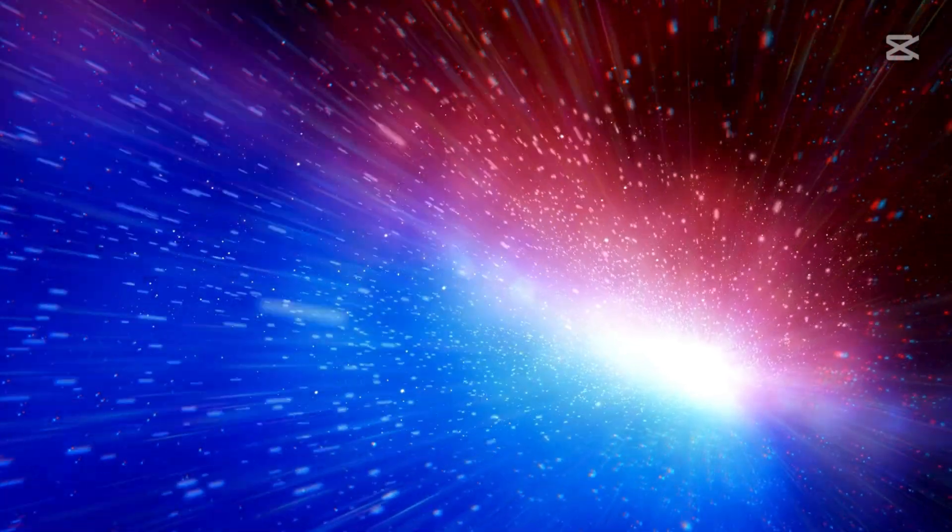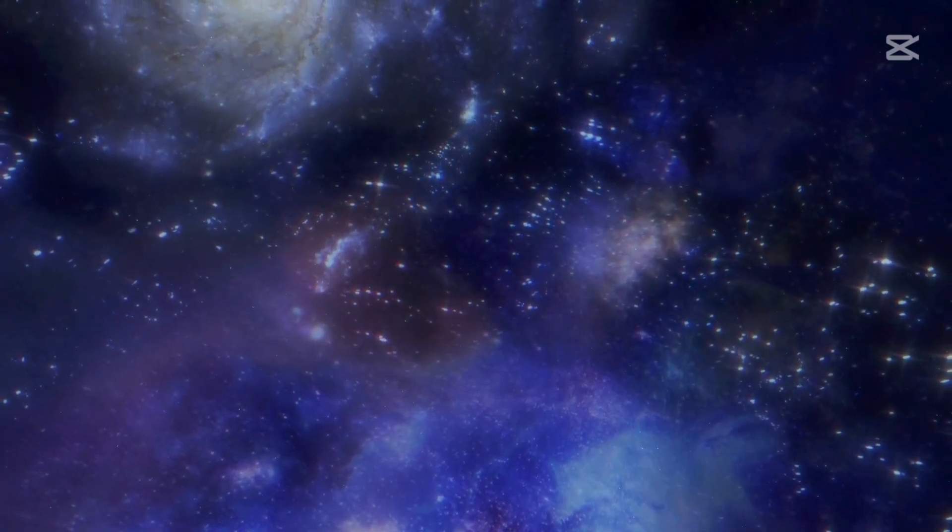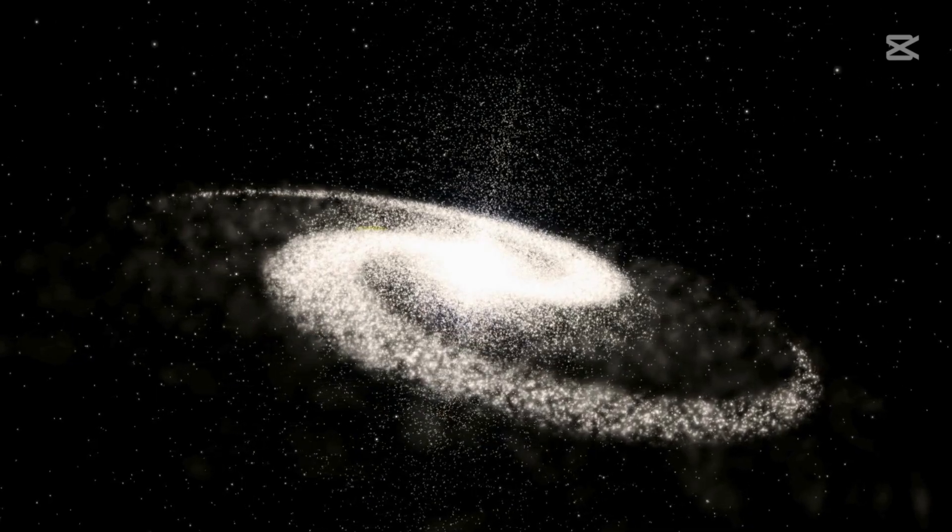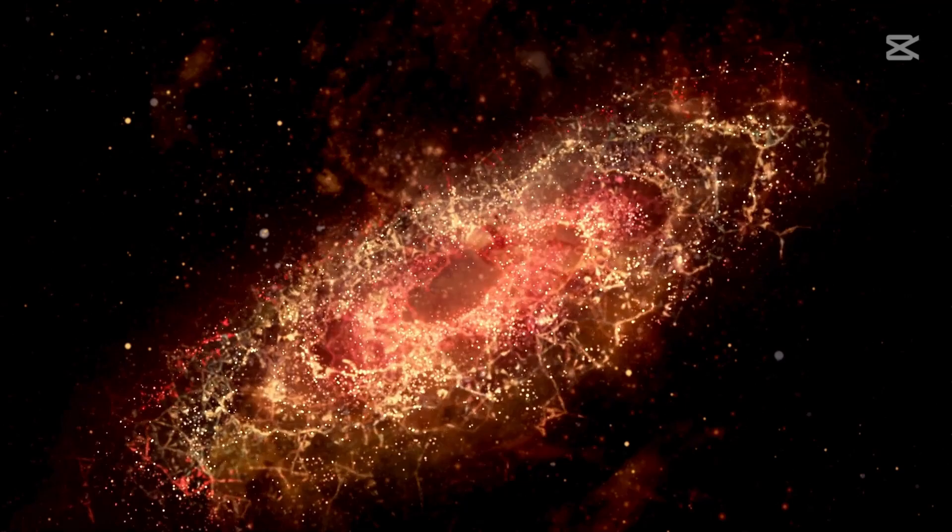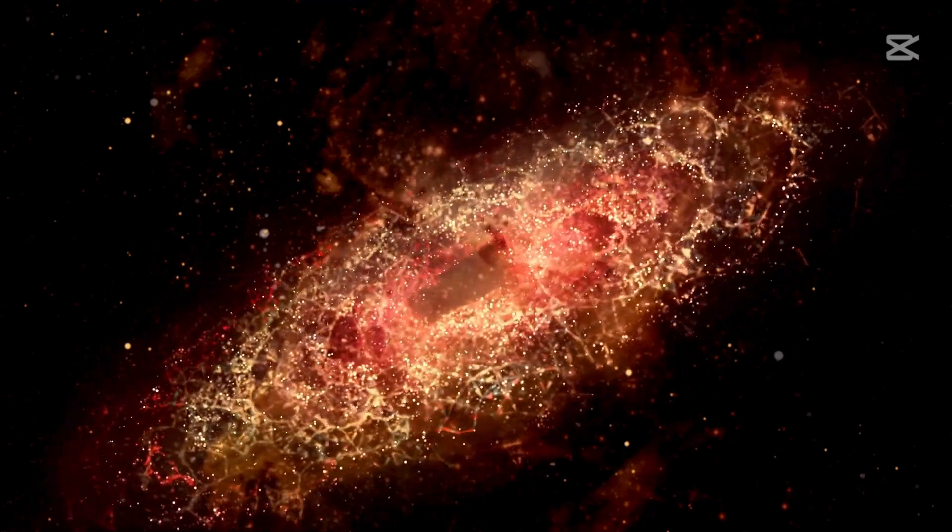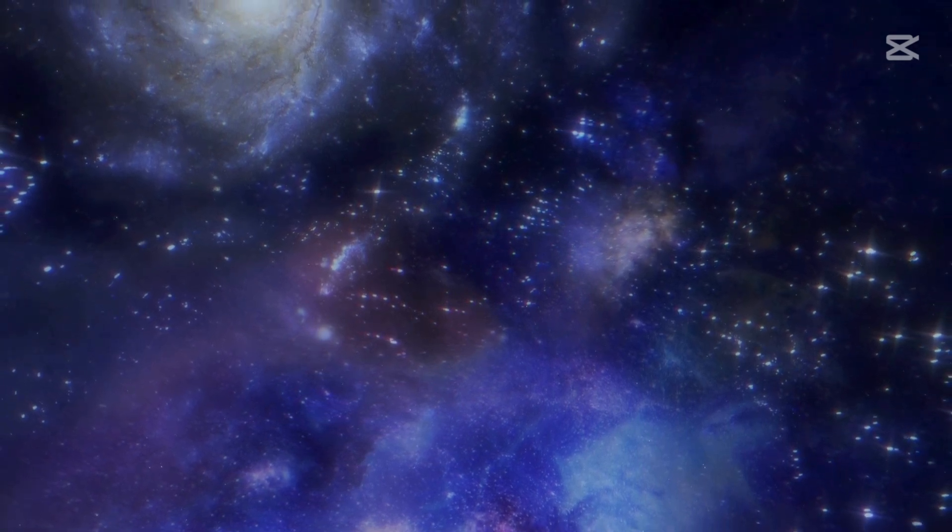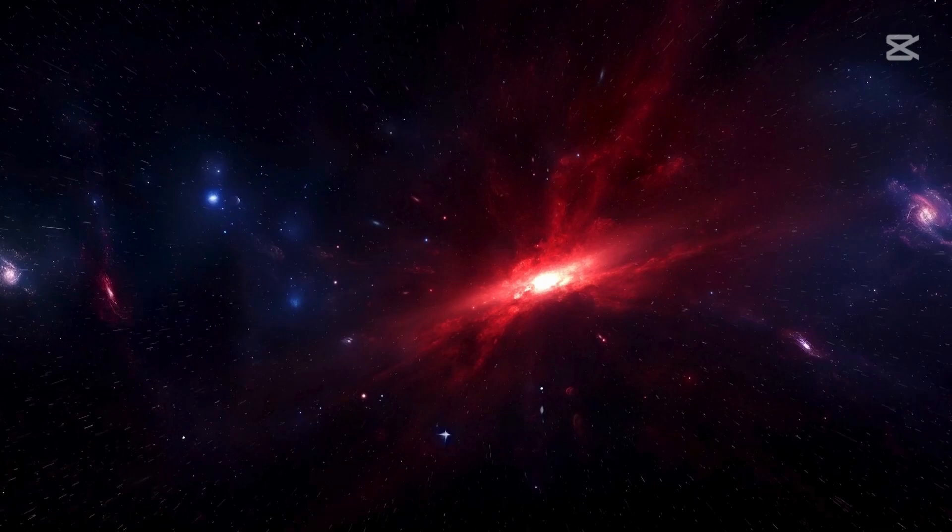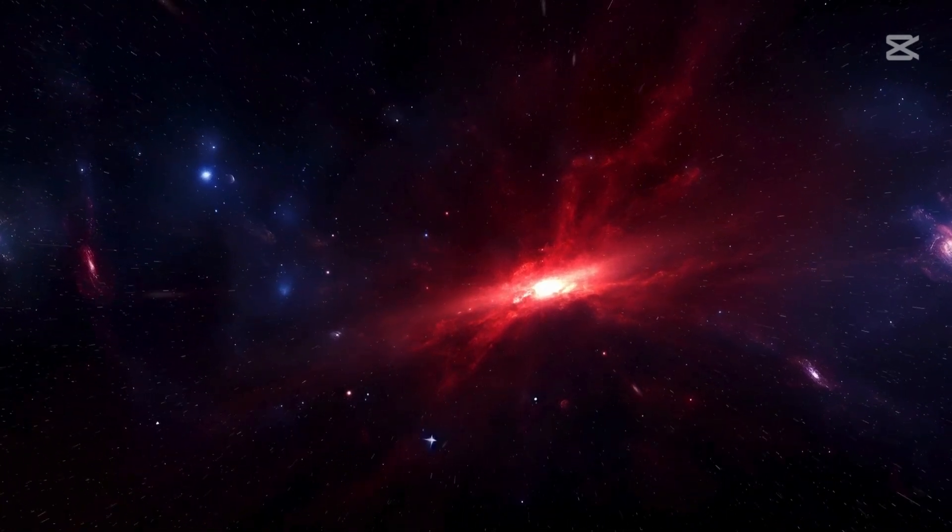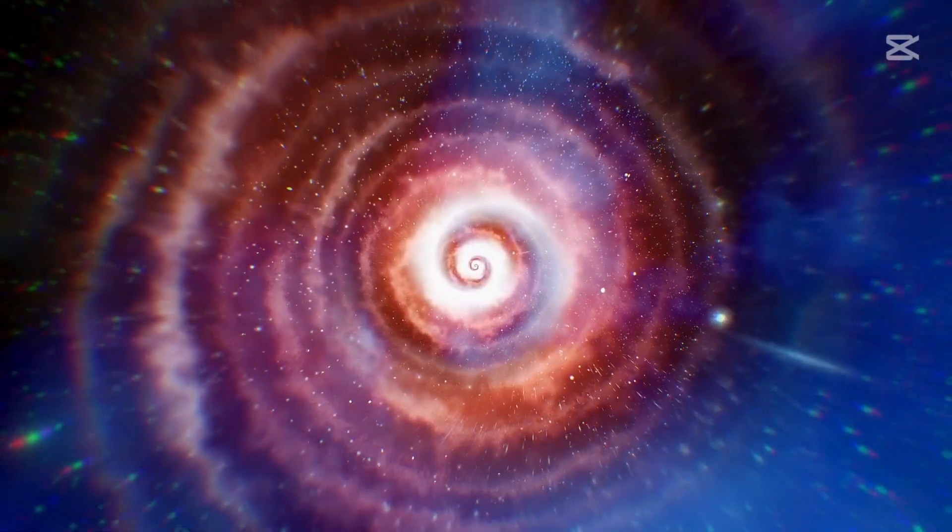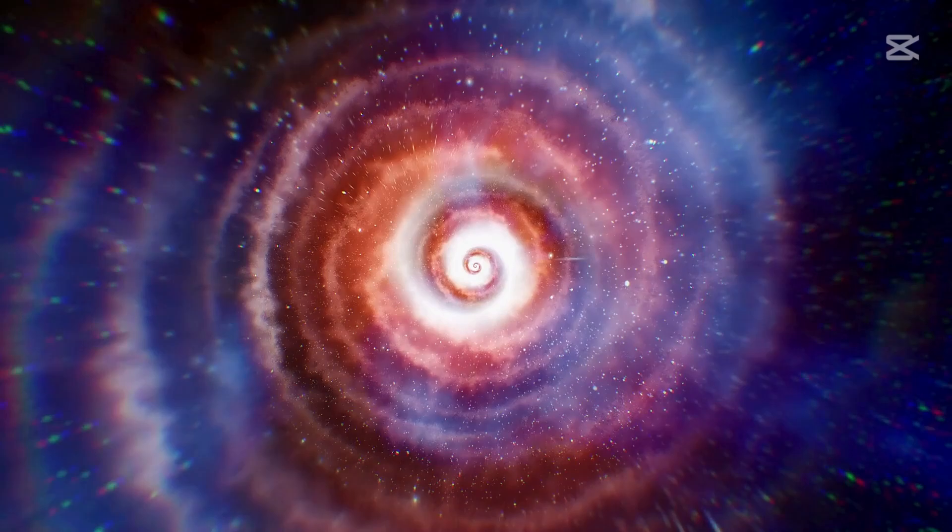As humanity ventures further into the unknown, we are learning that the questions we ask today are paving the way for the breakthroughs of tomorrow. Oumuamua also encourages us to look at the bigger picture of our own solar system. The more we learn about other parts of the galaxy, the more we understand about the processes that shape our own celestial neighborhood. The presence of organic compounds and materials not native to our solar system suggests that our local environment might not be as unique as once thought. It raises the possibility that other star systems, perhaps similar to ours, could harbor planets capable of supporting life, or that life itself may have originated from objects traveling between the stars.